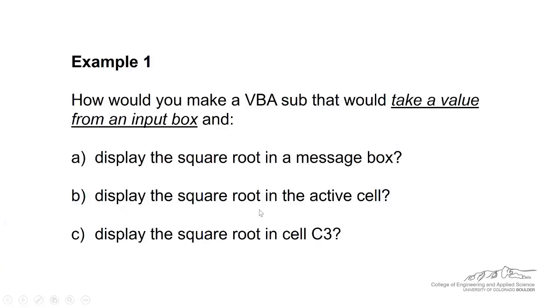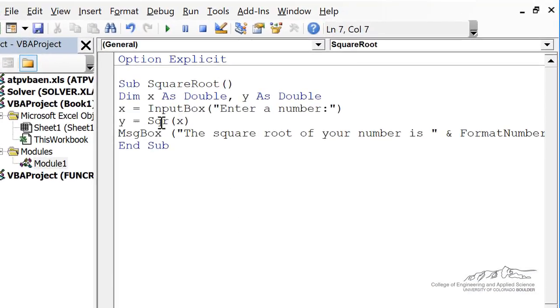The second part, B, is display the square root in the active cell. The only change we have to make here is instead of outputting in a message box, we output to the active cell, which here is B2. So everything else is the same, except we have active cell equals format number Y, 2.